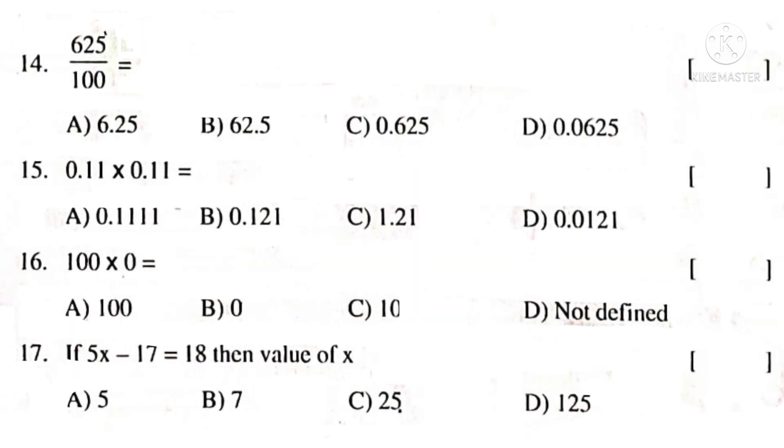625 by 100. Observe that there are two zeros in the denominator. So, put a decimal point counting from right side to left side after two digits. That is 6.25. So, the correct choice is A.